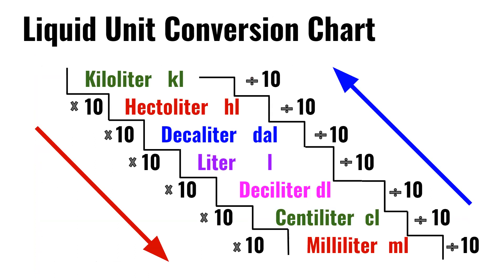Liter times 10 is the deciliter, which is dL. Deciliter times 10 is the milliliter, which is mL.